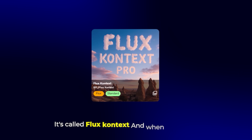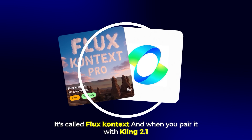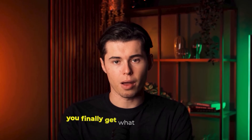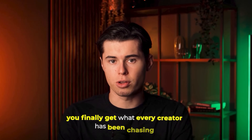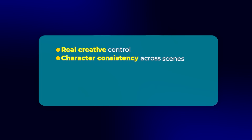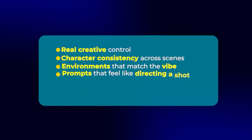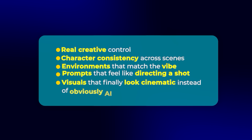It's called Flux Context. And when you pair it with Kling 2.1, you finally get what every creator has been chasing: real creative control, character consistency across scenes, environments that match the vibe, prompts that feel like directing a shot, and visuals that finally look cinematic instead of obviously AI generated.